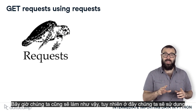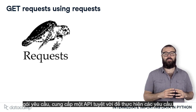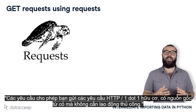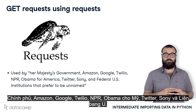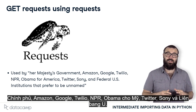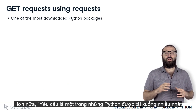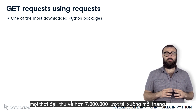Now, we're going to do the same. However, here we'll use the requests package, which provides a wonderful API for making requests. According to the requests package website, requests allows you to send organic, grass-fed HTTP requests without the need for manual labour. The following organisations claim to use requests internally: Her Majesty's Government, Amazon, Google, Twilio, NPR, Obama for America, Twitter, Sony, and federal US institutions that prefer to be unnamed. Moreover, requests is one of the most downloaded Python packages of all time, pulling in over 7 million downloads every month.